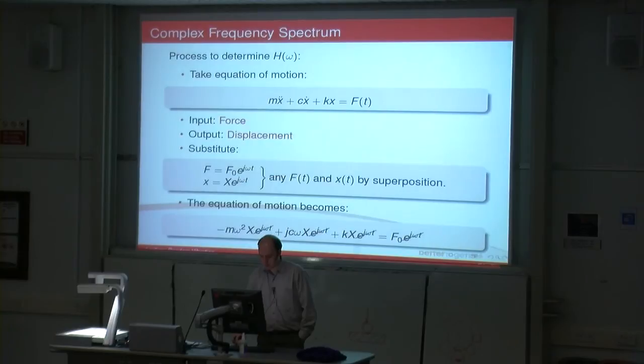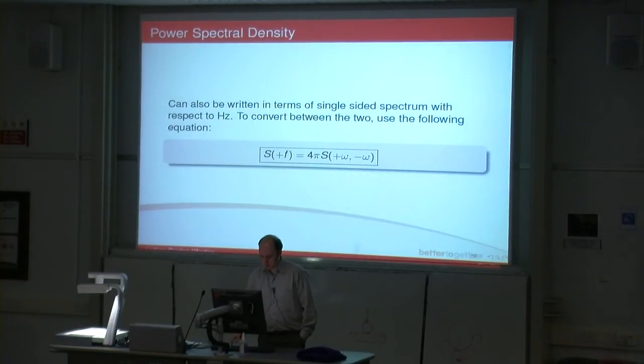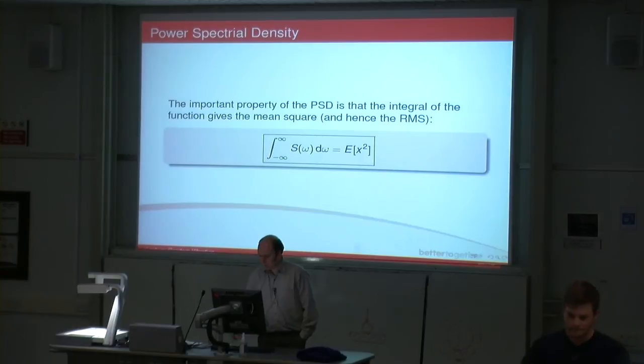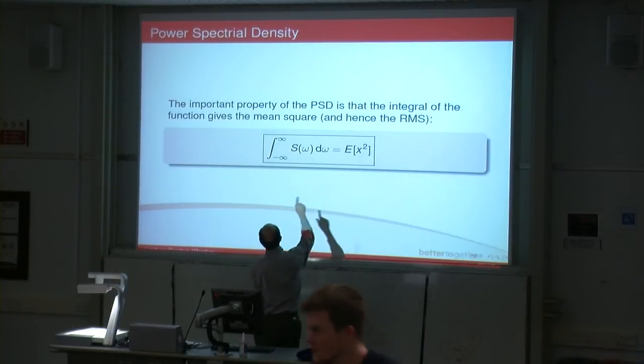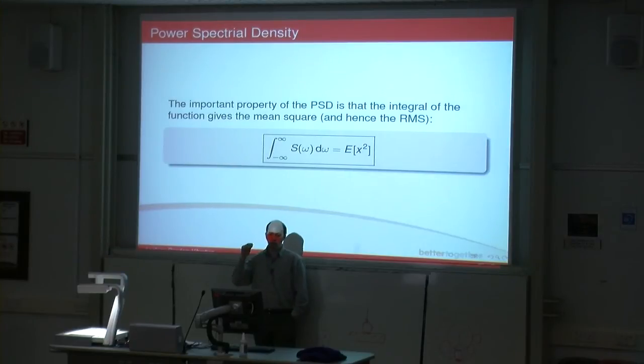The mean square is the integral of the power spectral density of the output. The whole idea is that I give you an input power spectral density to a system for which you can calculate your H omega. You then work out what the output spectral density is, you integrate it, and you get your mean square. You take the square root of the mean square, you get your RMS.